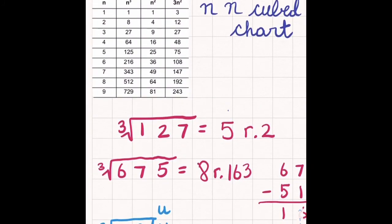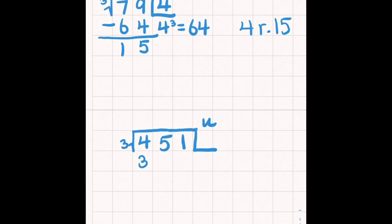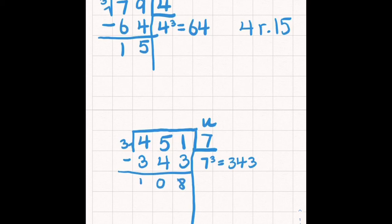What cube is closest to 451? It looks like the cube of 7, which is 343. Where I got that number from, not my answer. And I'm going to subtract. And I get 7 with the remainder of 108.